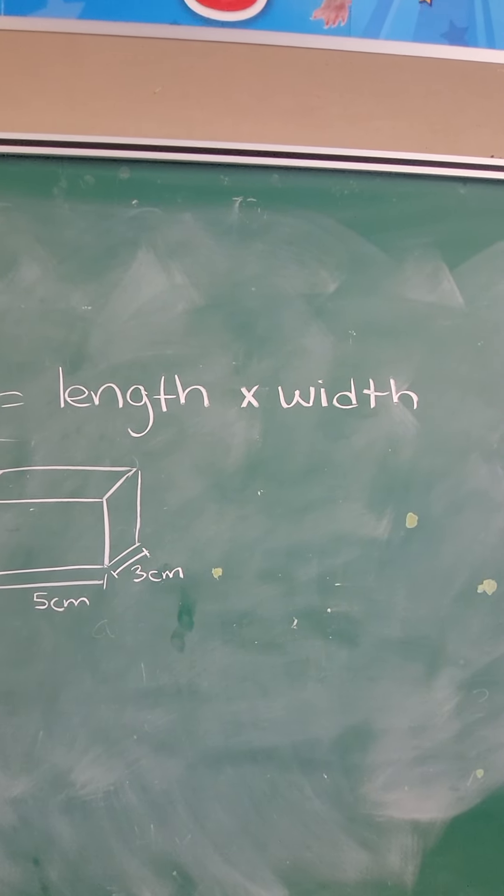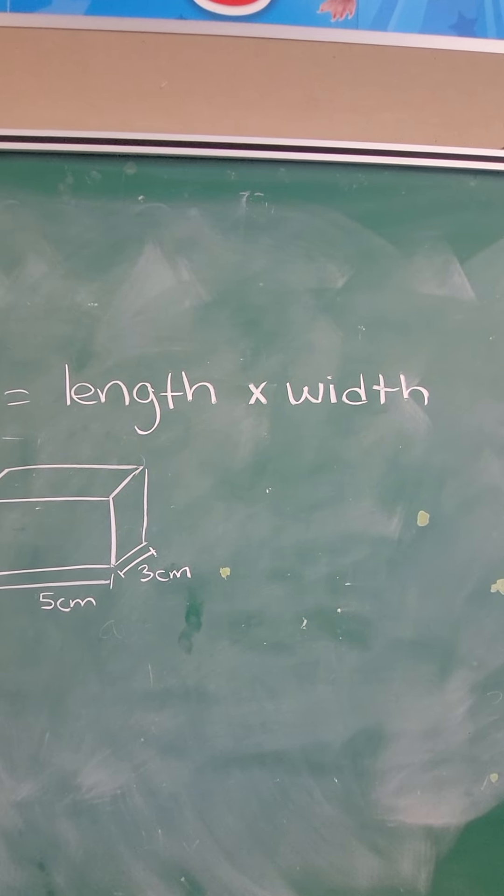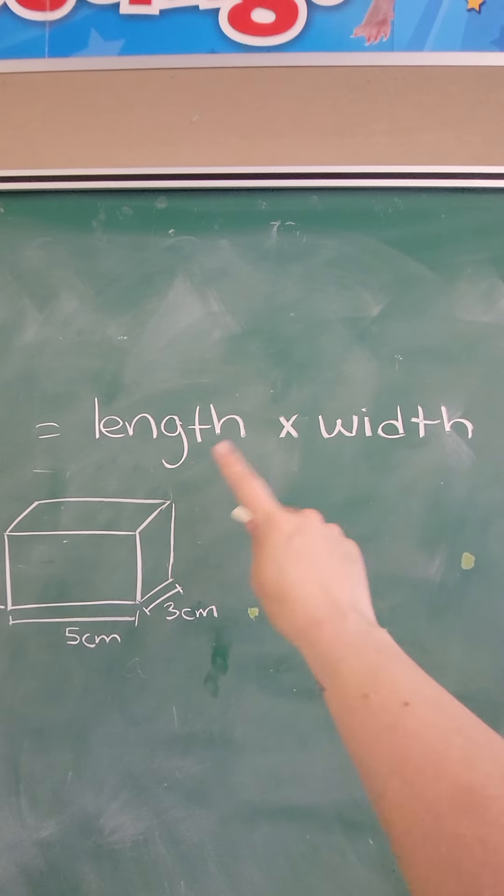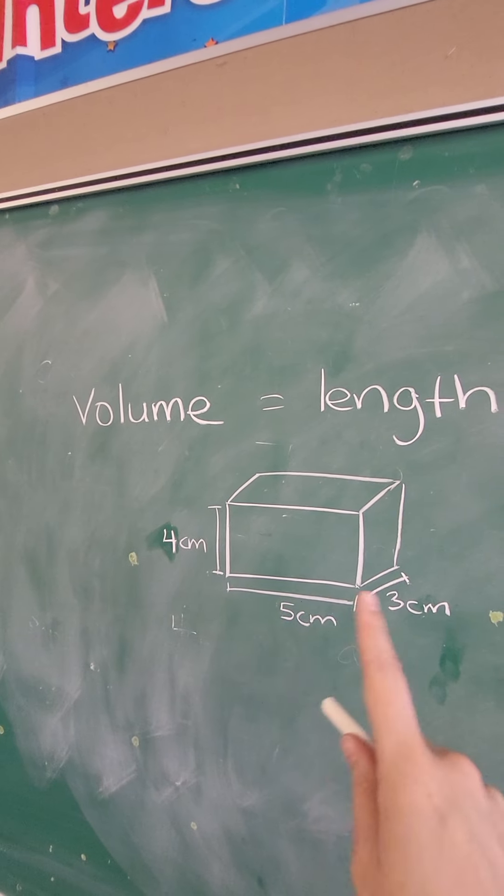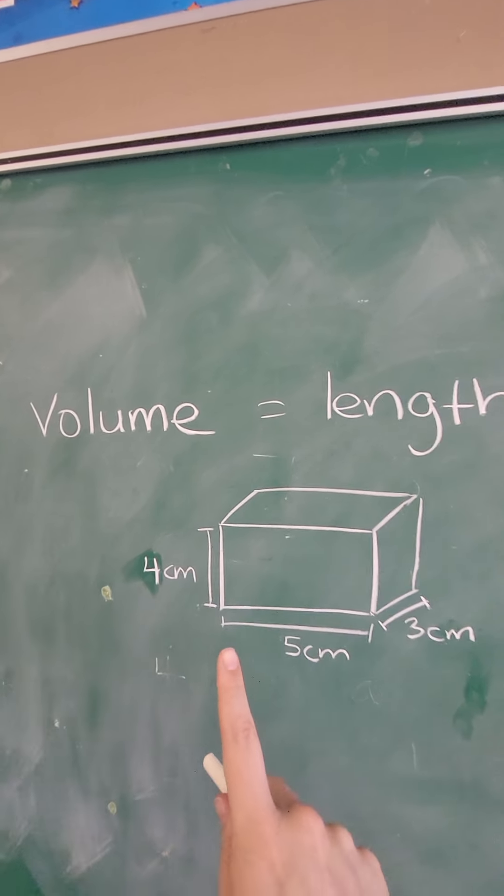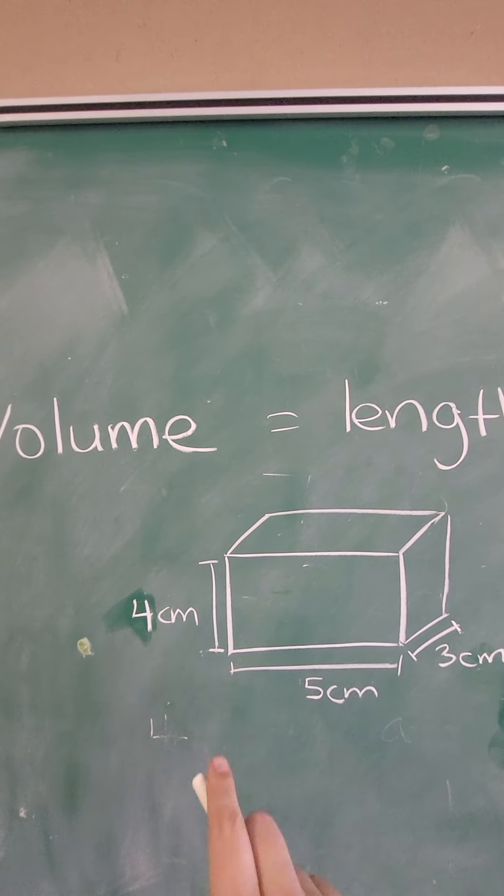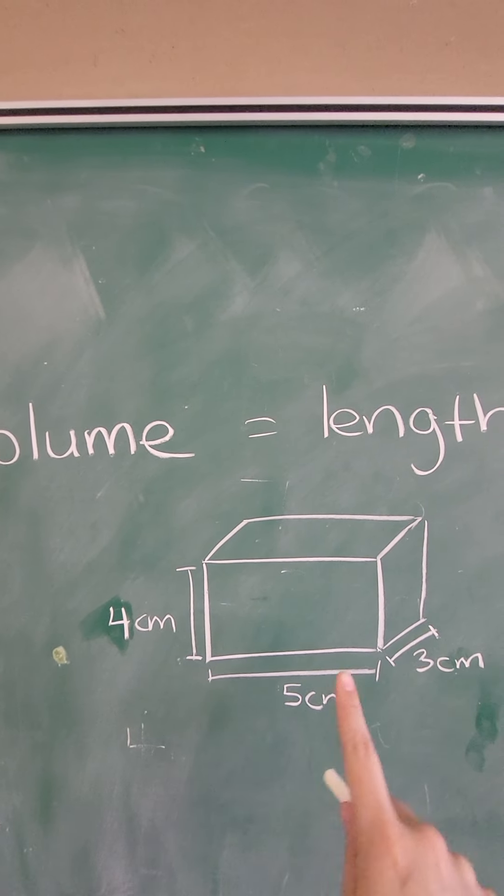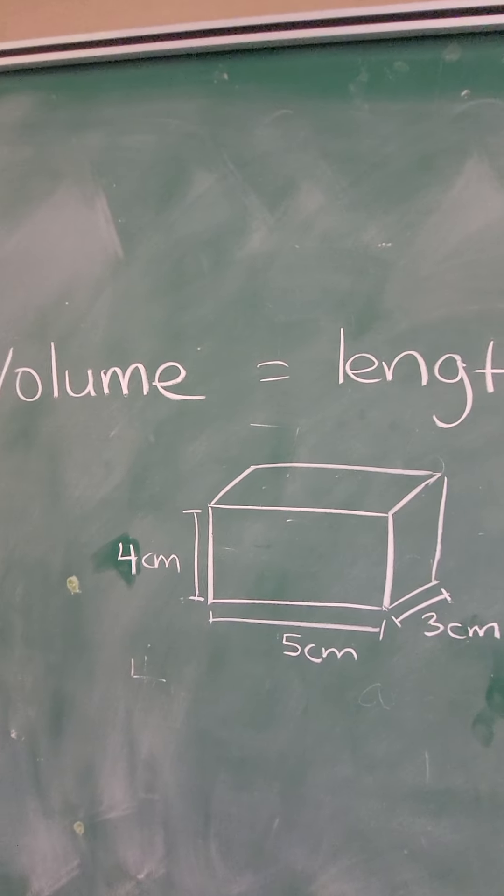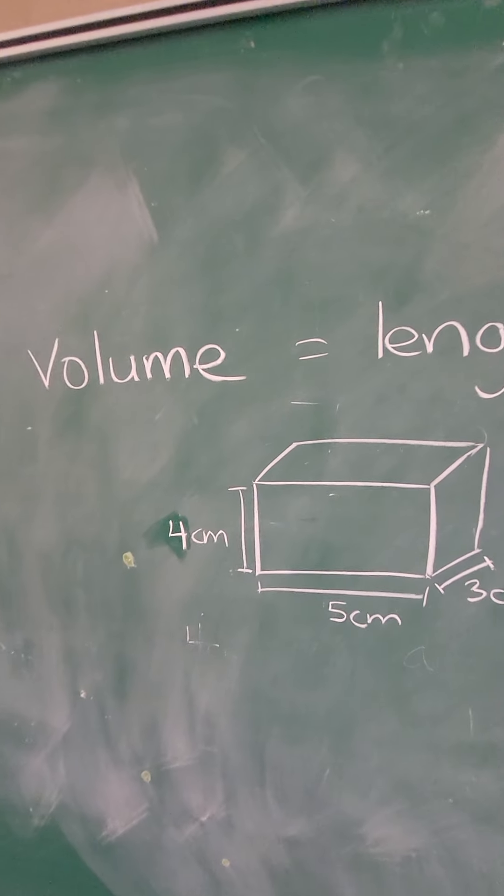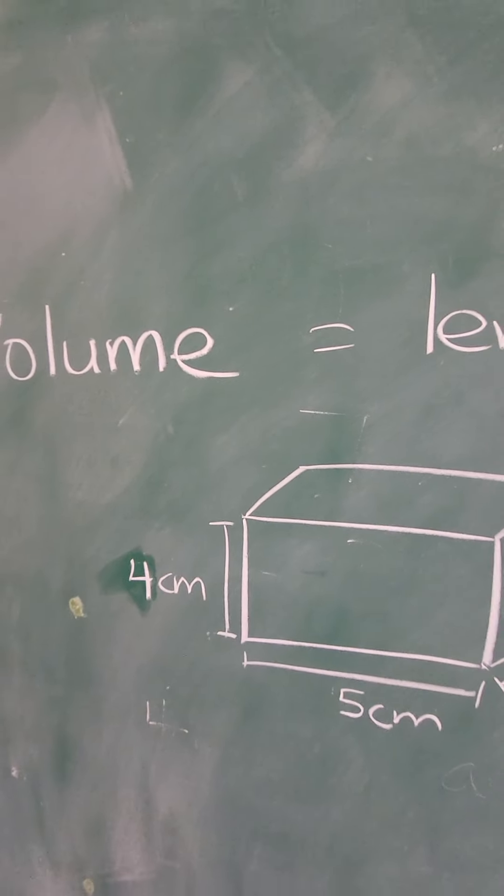But remember we said because it's 2D or two-dimensional, it has literally two dimensions, length and width. So because it's a 3D shape now, yes, we have two dimensions, length and width, but now another dimension has been added, and that is the height, how tall it is.